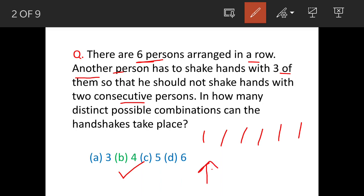Now he has to shake hands such that every time he is shaking hands with three people and no two people are in continuation. That means he can shake hands here, here, and here - this is one way.